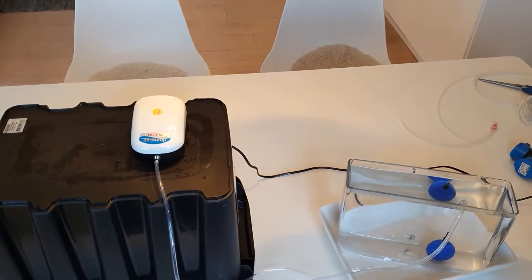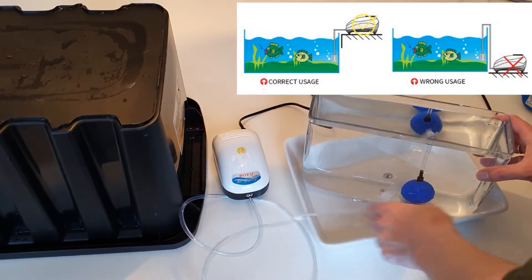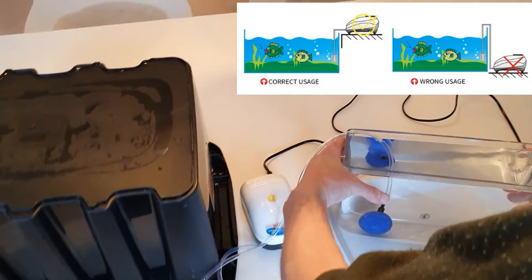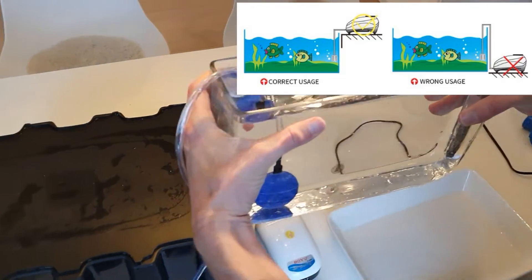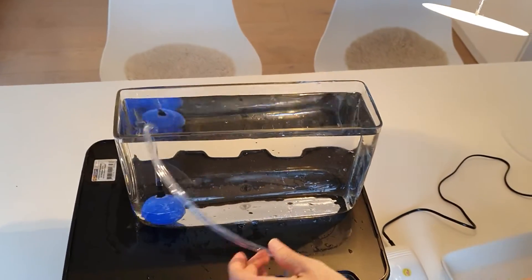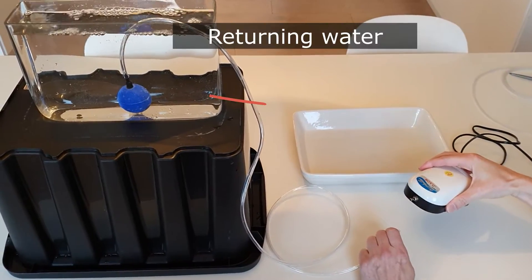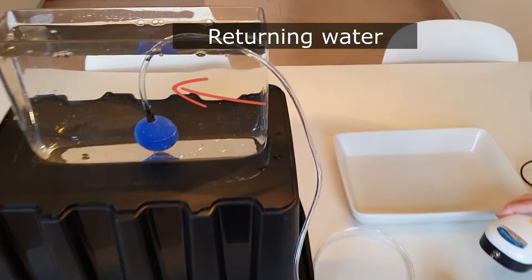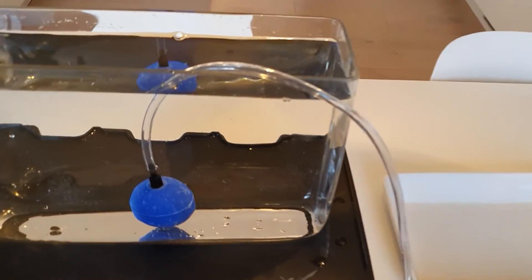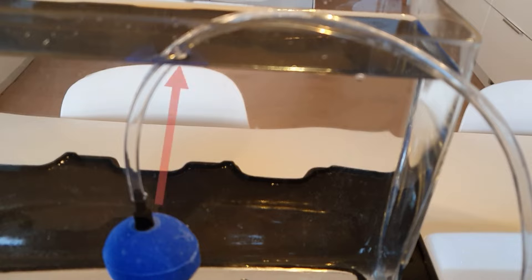We will now try to do it the wrong way. We place the tank higher than the pump. According to the manual this may cause water to siphon out of the tank. Once again we simulate power outage by disconnecting the airline. The water returns but it stops at the surface level.